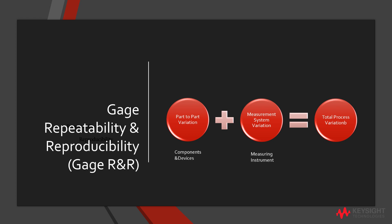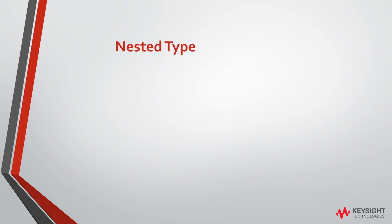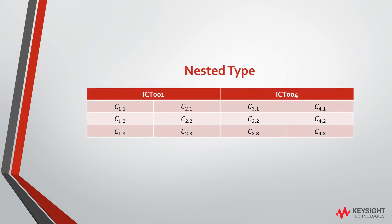One is the nested method and the other is the crossed method. The nested method is applied if successive testing of a part alters or damages the value of the part. With measurement from ICT001, Component 1 has been tested three times to check if the variability of Component 1 is acceptable, which is repeatability.